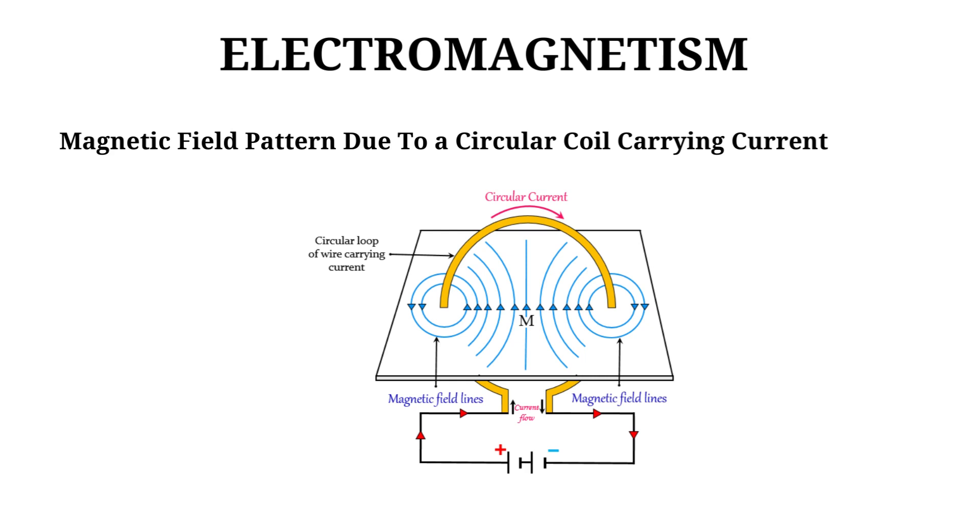The strength of magnetic field produced by a current carrying circular coil can be increased by increasing the number of turns of wire in the coil, by increasing the current flowing through the coil.